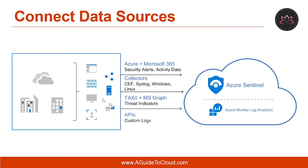To onboard Azure Sentinel, you first need to connect to your data sources. Azure Sentinel comes with a number of connectors from Microsoft solutions, available out-of-the-box and providing real-time integration, including Microsoft Threat Protection Solutions and Microsoft 365 sources such as Office 365, Azure AD, Azure ATP, and Microsoft Cloud App Security. To connect external applications, an agent must be deployed on a dedicated machine. You can deploy the agent automatically or manually — automatic deployment is only available for new VMs created in Azure, while manual deployment works on existing Azure VMs, VMs in another cloud, or on-premises machines.